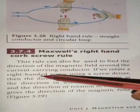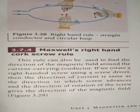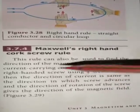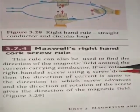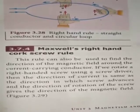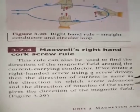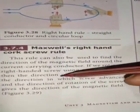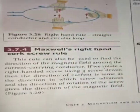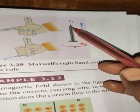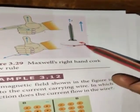This rule can also be understood using a screwdriver analogy: if we rotate a right-handed screw using a screwdriver, the direction of the current is the same as the direction in which the screw advances, and the direction of rotation of the screw gives the direction of the magnetic field.